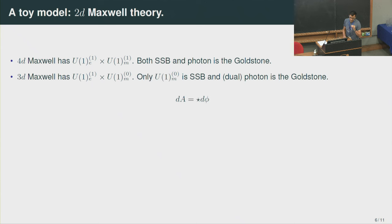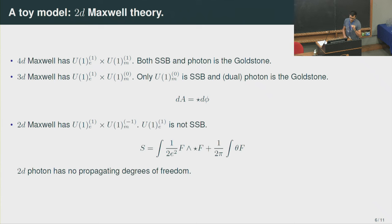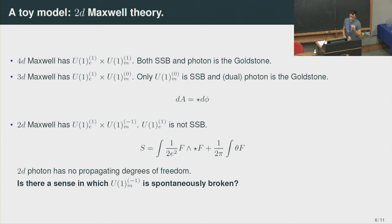In 3D, there is a similar story, but the electric one-form symmetry is not spontaneously broken. Still, the zero-form magnetic symmetry is spontaneously broken, and the photon and its dual — a compact scalar — can be understood as the Goldstones for this breaking. Then the question is what happens in 2D Maxwell. We have an electric one-form symmetry which is not spontaneously broken, and the magnetic symmetry is minus-one form. We can introduce the theta term as the background field for this symmetry. The 2D photon has no propagating degrees of freedom, and the question is in which sense we can think of 2D Maxwell as describing a spontaneously broken magnetic minus-one-form symmetry, and in which sense the 2D photon is the Goldstone.